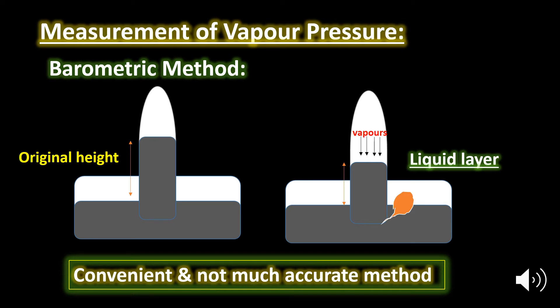One or two drops of the test liquid are introduced into the barometric tube through its lower end using a dropper. The liquid rises above the surface of the mercury, and a part of the liquid vaporizes due to the pressure exerted by the vapors.